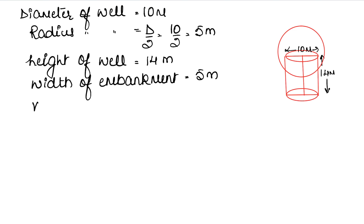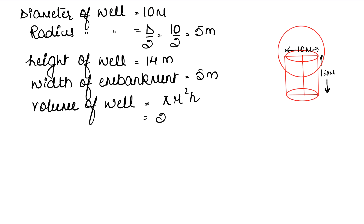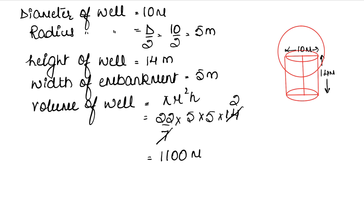Now we will first find the volume of the well. Volume of a cylinder is π r² h. Taking π = 22/7, r = 5, and h = 14, this gives us: (22/7) × 5² × 14 = 1100 cubic meters. This is how much earth was removed from the well.